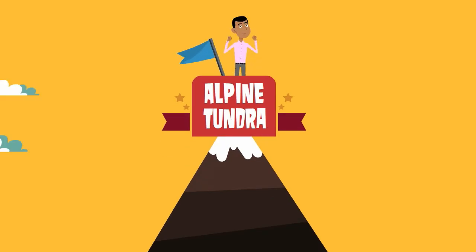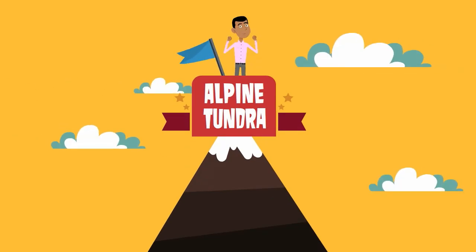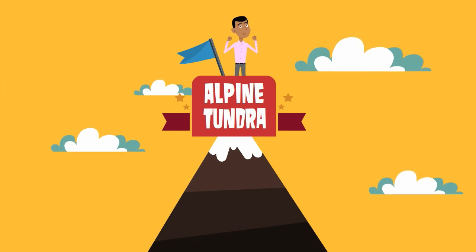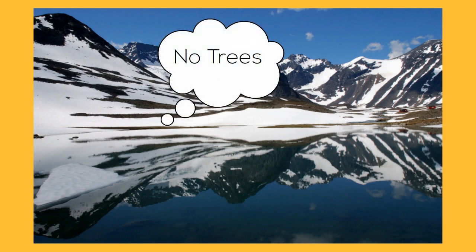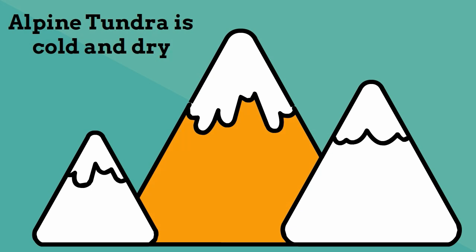The alpine tundra occurs at almost any latitude and is found at high elevations of 10,000 feet and above. The alpine tundra is found above the tree line and does not have any trees. Because of the high elevation the alpine tundra has a climate and rainfall similar to the arctic tundra: cold and dry with a short growing season.